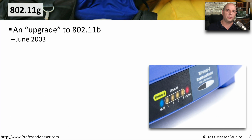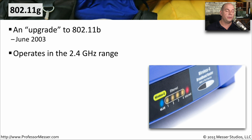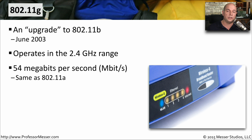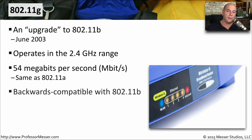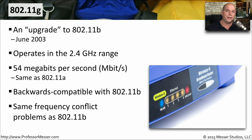In June of 2003, we got an update to the 802.11b standard with 802.11g. Just like the b standard, the g standard operates in the 2.4 gigahertz range, but the speed was increased to 54 megabits per second, matching what we found with 802.11a. Because this is an update to the b standard, it's backwards compatible with 802.11b devices. But because it runs in the 2.4 gigahertz range, we still had the problem with interference from other devices in our homes.